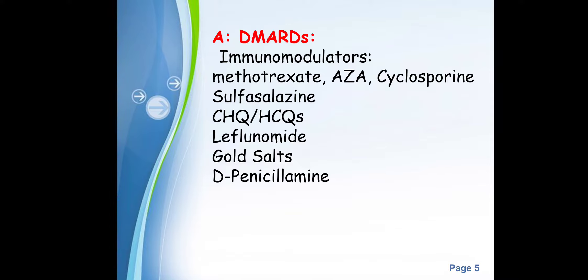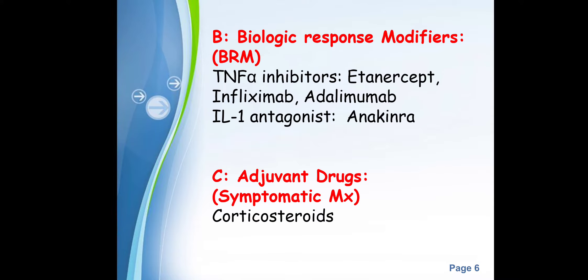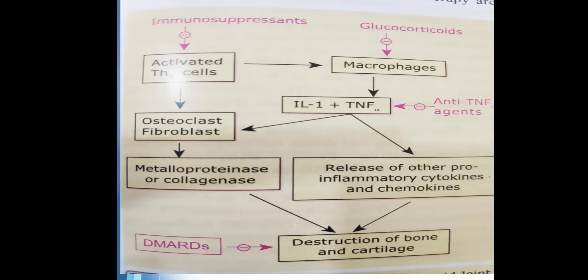The non-biological immunomodulators include methotrexate, azathioprine, cyclosporine, sulfasalazine, hydroxychloroquine, and leflunomide. We'll go through each of these drugs one by one and cover their important points. Before doing that, the following figure will clarify the mechanism of action of these drugs.